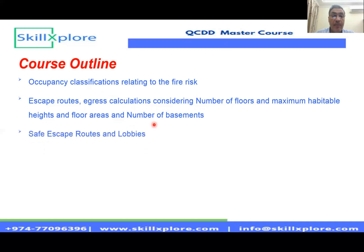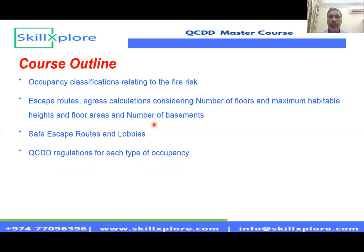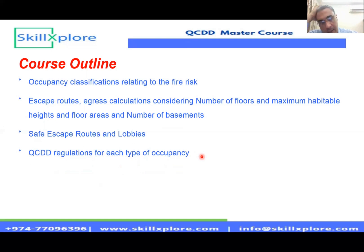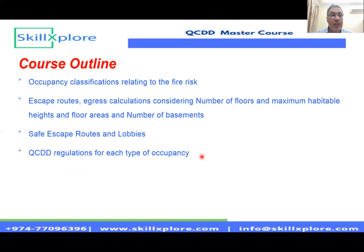We'll talk about safe escape routes and lobbies — lift lobbies, smoke lobbies, firefighting lobbies — and what the QCDD regulation is for each type of occupancy: residential, hotel, mixed-use, offices, school, etc. For the QCDD exam specifically, they are mainly focused on the residential building. If they don't specify the nature of the building and the occupancy, consider it a residential building. This is how they typically frame their questions — so basically, they are talking about residential buildings.